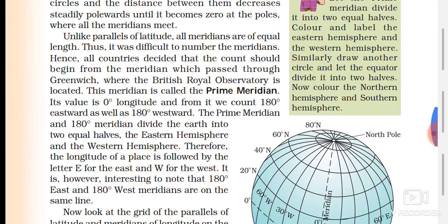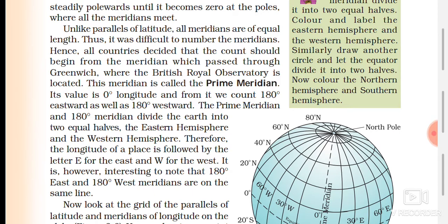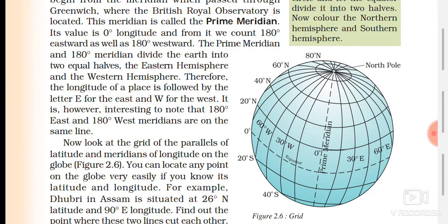Unlike parallels of latitude, all meridians are equal in length. Since it was difficult to number the meridians, all countries decided that the count should begin from the meridian which passes through Greenwich, where the British Royal Observatory is located. This is called the prime meridian and is located at zero degrees.